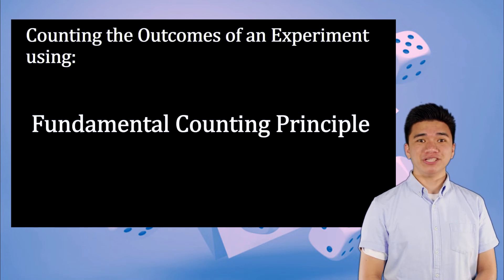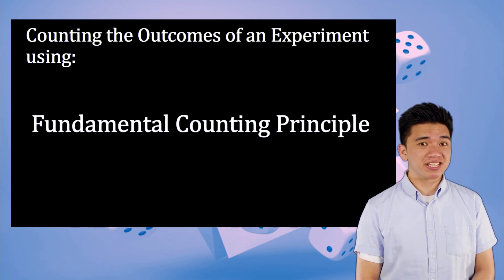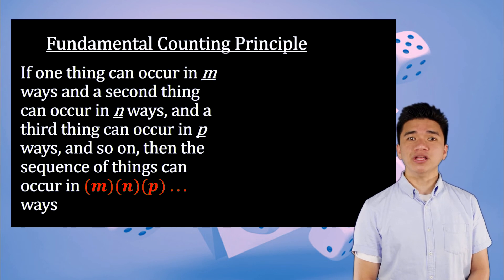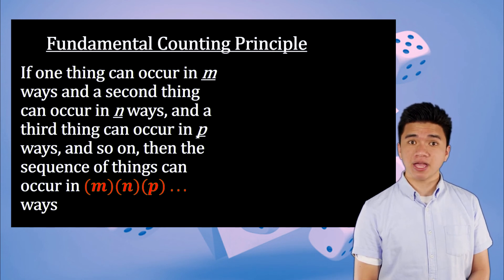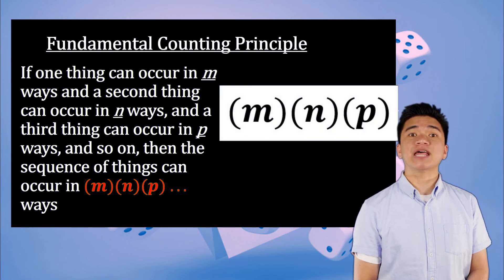We also have the fundamental counting principle. This is used to easily count the number of possible outcomes without the tedious process of the previous methods. It states that if one thing can occur in M ways, a second thing in N ways, and a third thing in P ways, and so on, then the sequence of things can occur in M × N × P ways.